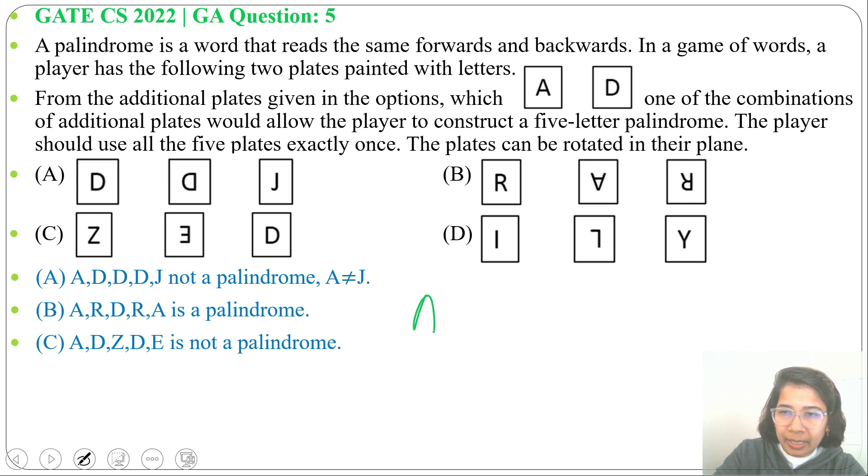Next option D: A, D, I. After rotation we will get L, Y. This is not a palindrome. For palindrome first letter should be equal with the fifth letter. Then second letter should be equal with the fourth letter. As here D is not matching with L. A is not matching with Y. Even we will switch the position, it's not a palindrome.